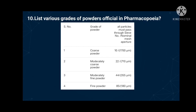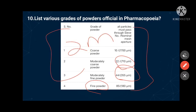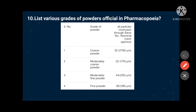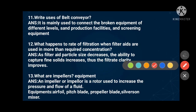The tenth question: list various grades of powders official in the Pharmacopoeia. All particles must pass through the designated sieve or mesh aperture. Coarse powder: sieve number 10. Moderately coarse powder: 22. Moderately fine powder: 44. Fine powder: 85. Practice this table and you can secure the two marks.